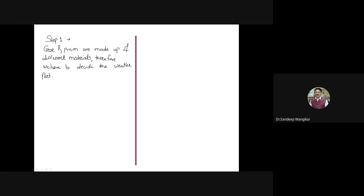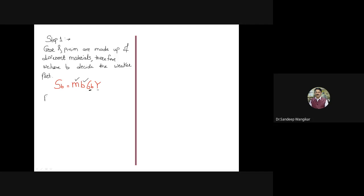The weaker part is determined based on the product σb × Y. Recall beam strength Sb = m·b·σb·Y — module and face width are the same for pinion and gear since they mesh together, but σb differs because material is different, and Y differs because the number of teeth is different. So we calculate σb × Y for pinion and σb × Y for gear.